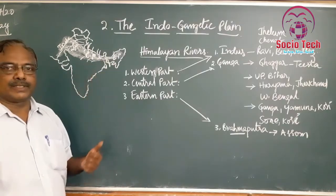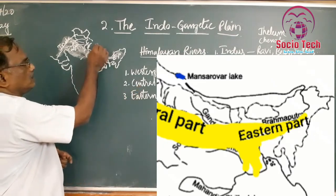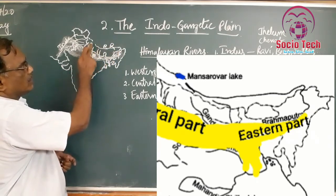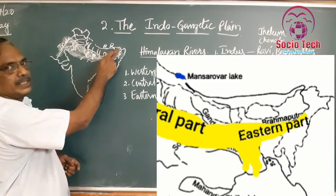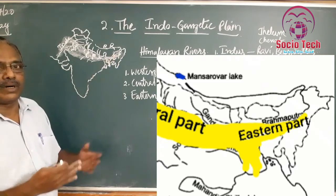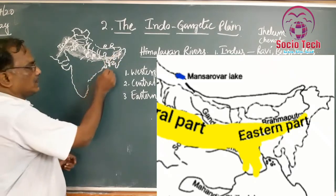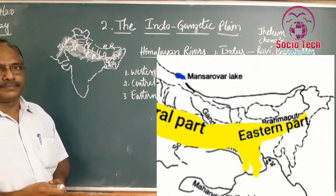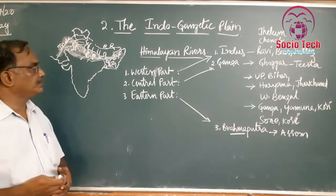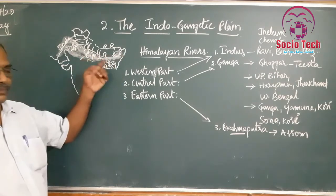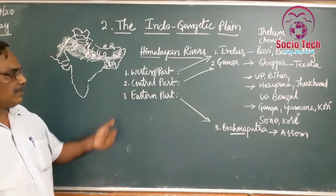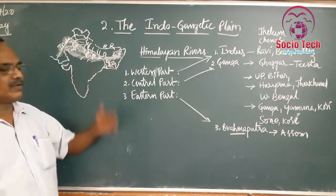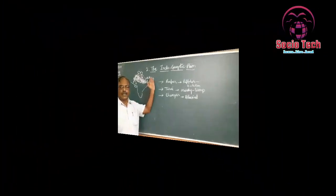The eastern part is mostly formed by the Brahmaputra river. The Brahmaputra starts near Mansarovar and flows towards the east, entering the Assam basin where it is known as the Brahmaputra. Entering Bangladesh, it joins the Ganga. The Assam plain is formed by the Brahmaputra and this river also causes floods in the Assam plain.